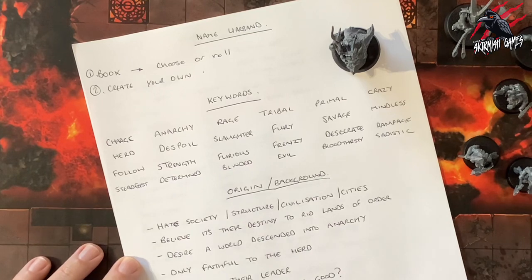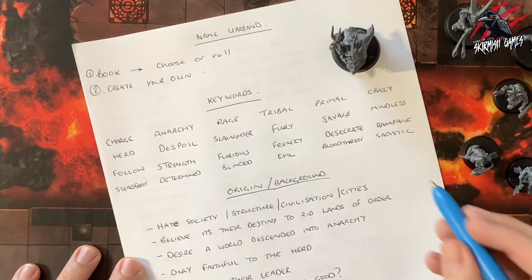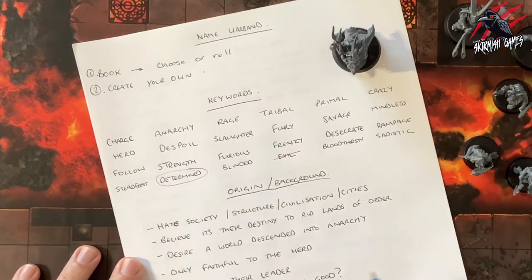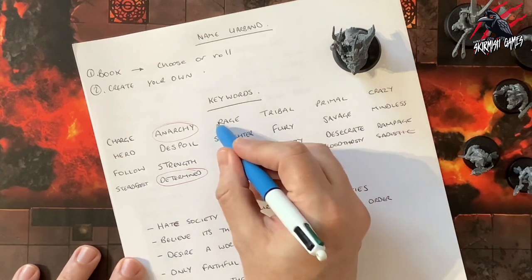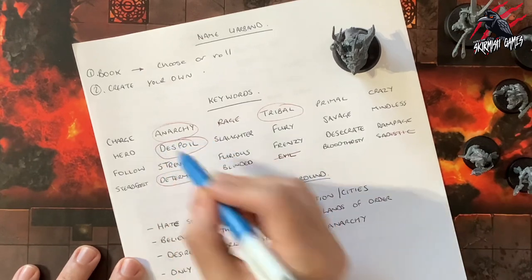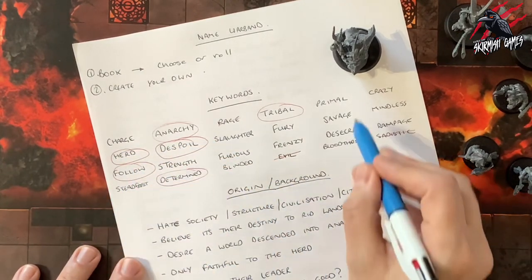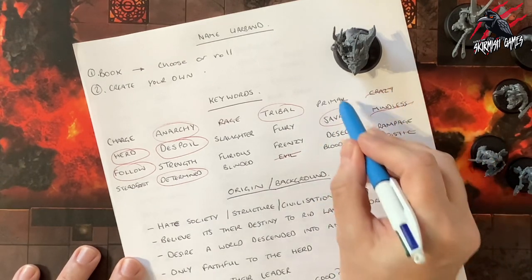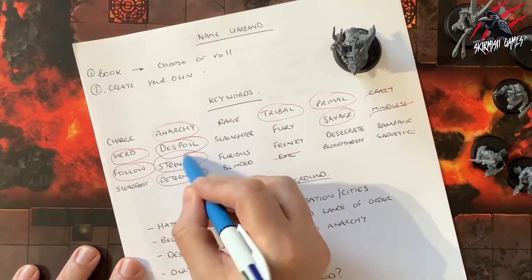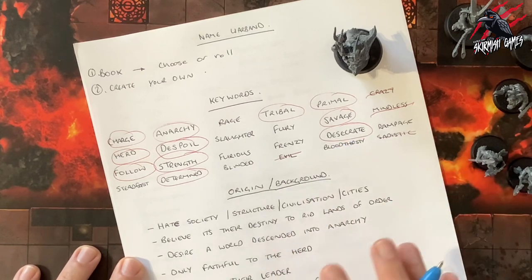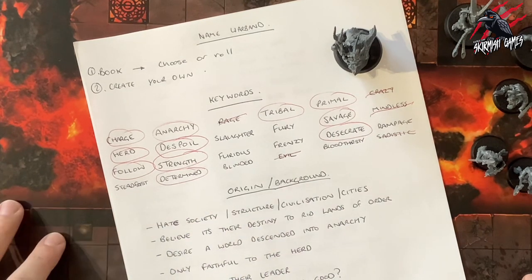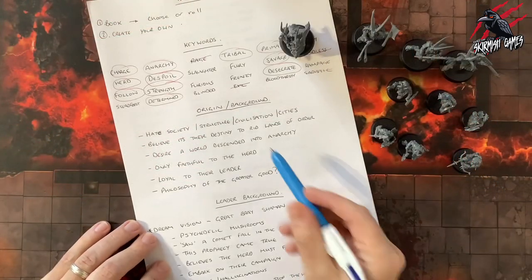I'll work through the keywords and circle or cross out words that I think would describe the warband I want to create. Straight away, 'evil' isn't something I would put with these — I'd cross that one out. I would say they're going to be determined. They're not sadistic, but they really rely on anarchy and look for it. They're very tribal and want to despoil society. They act as a herd, follow the leader. They're savage, not mindless and not crazy, but primal and strong. And they like to desecrate anything to do with society — they want complete anarchy.